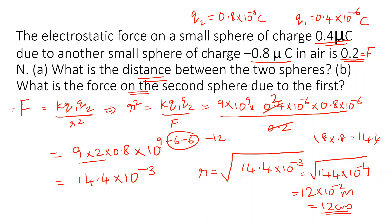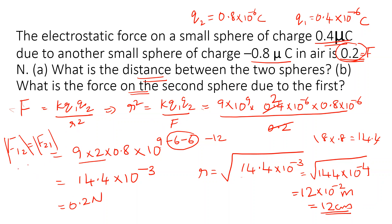The second part asks for the force on the second sphere due to the first. According to Newton's third law of motion, F12 is equal and opposite to F21, but magnitude-wise F12 = F21. So the force on the second sphere due to the first is also 0.2 Newton.